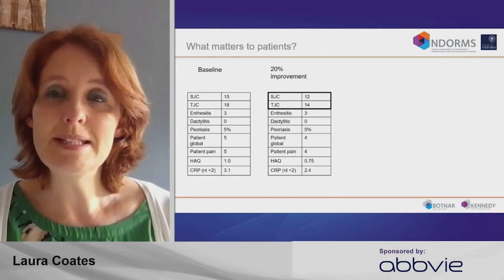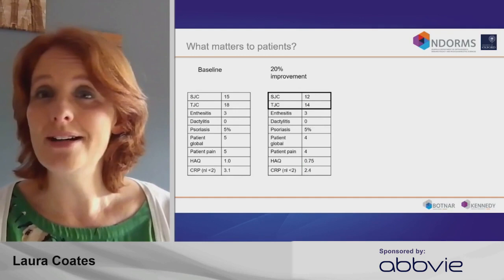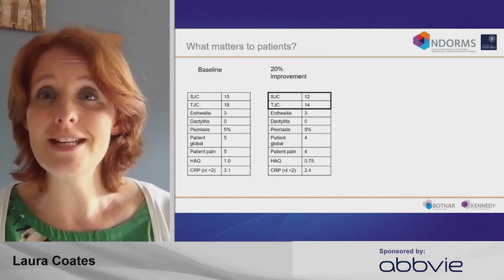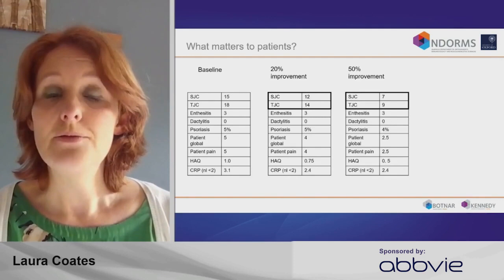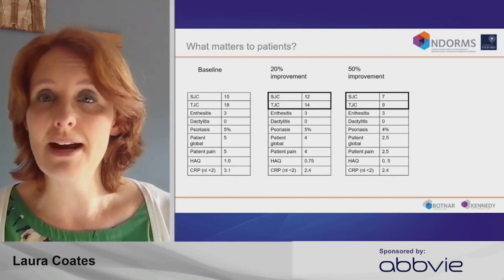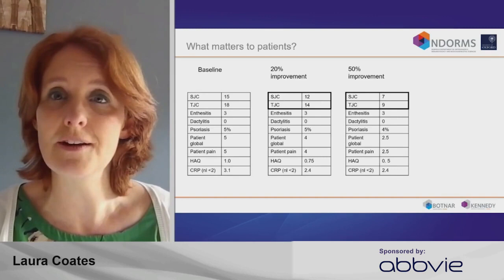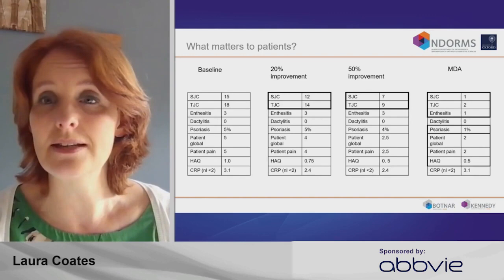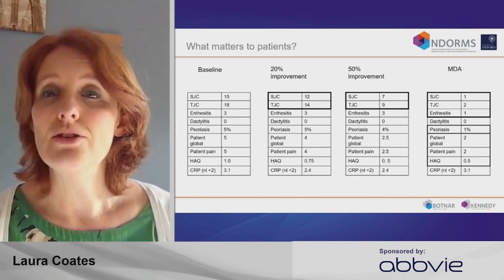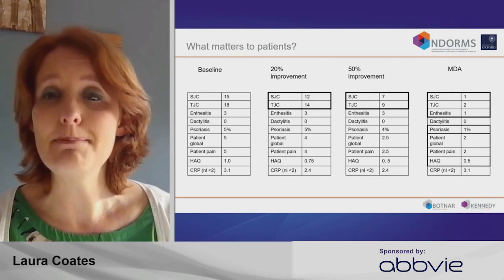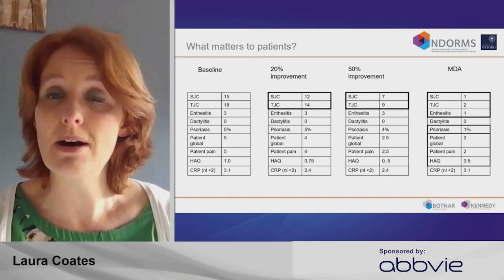If we can get a 20% improvement in her joints — an ACR20, the most common endpoint in drug trials — there's a significant reduction in her outcomes, but she's still struggling. This is not where you'd want to be in her shoes. A 50% improvement is obviously better, but there's still a fair amount of disease activity. If you can achieve minimal disease activity or very low disease activity, that's when things are truly under control: joint counts come down to near normal levels, good control of psoriasis, and patient-reported outcomes showing low impact and activity.